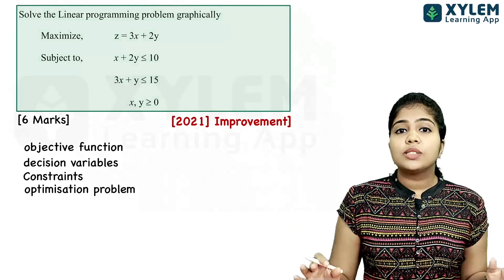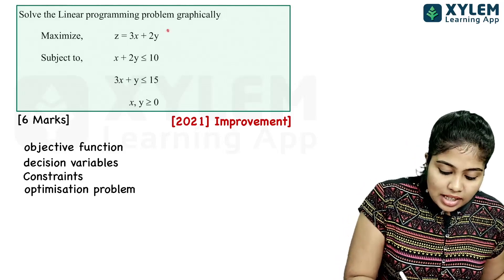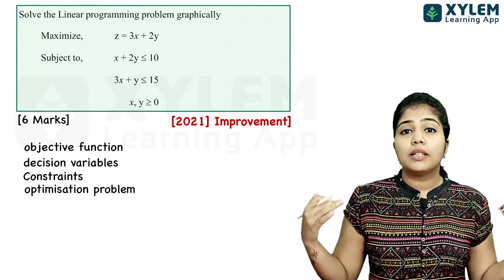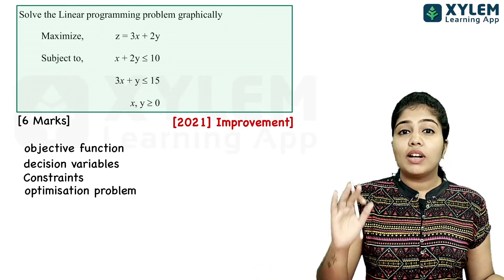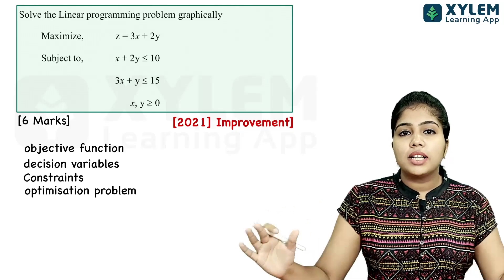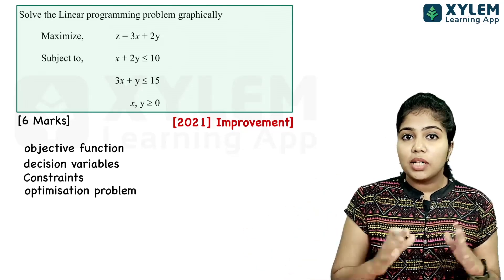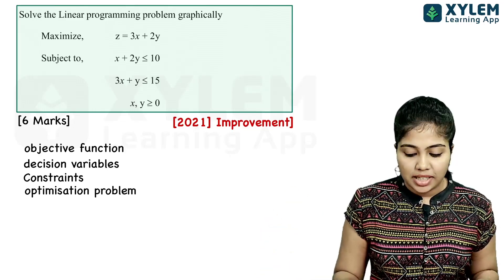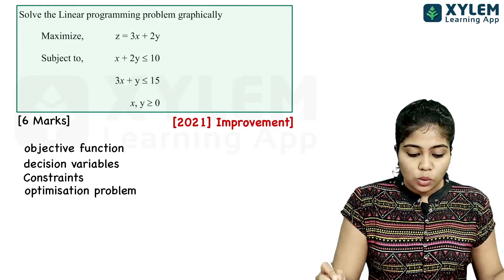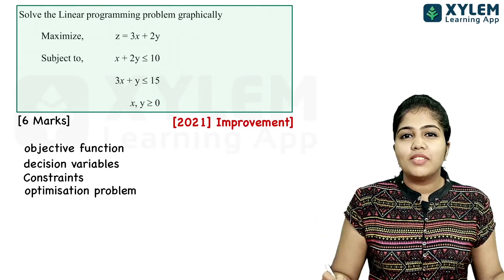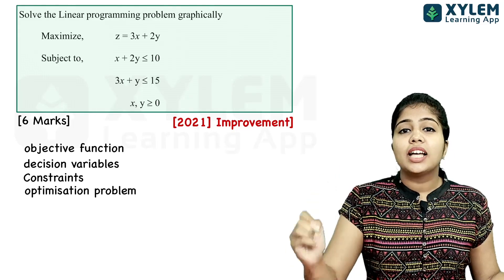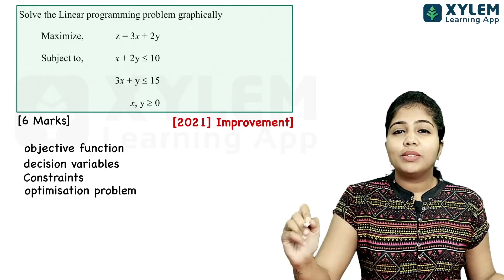Now, in this question, z is equal to 3x plus 2y, and we call it maximize. When we call it maximize, it is very simple. There are a few terms we need to know. We call z equal to 3x plus 2y the objective function. This function is called the objective function.